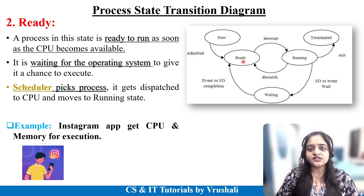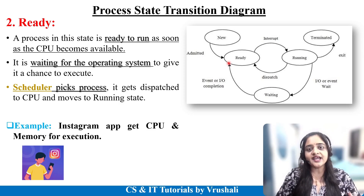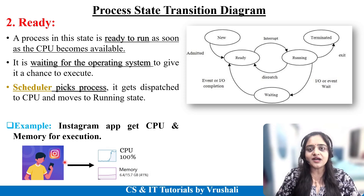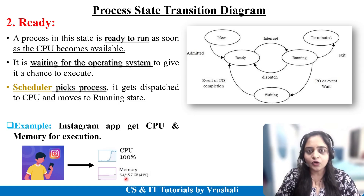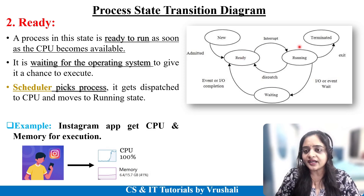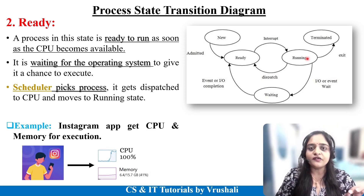In the ready state, your process goes to a waiting state — they are waiting for CPU processing power and waiting for the operating system for execution. When the user clicks on the Instagram app, the process is created and the Instagram application waits for CPU processing power and memory for loading. This is the ready state. It is the responsibility of the scheduler to pick up the process from the ready state and, after getting CPU processing power and memory, move it to the running state.